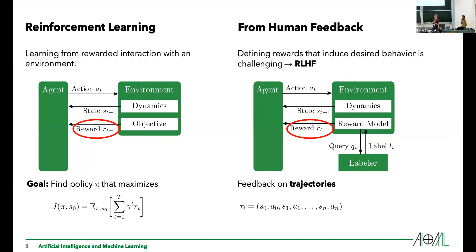The main difference in reinforcement learning from human feedback is that we have this human labeler in the loop. We still get rewards, so we can still use the same reinforcement learning algorithms. The only difference is that we now have a reward model instead of the objective — a learned function of the human's preferences that generates the rewards instead of an engineered reward function.